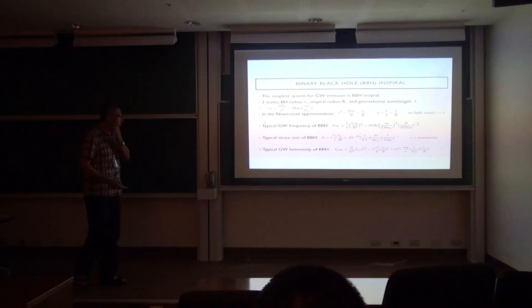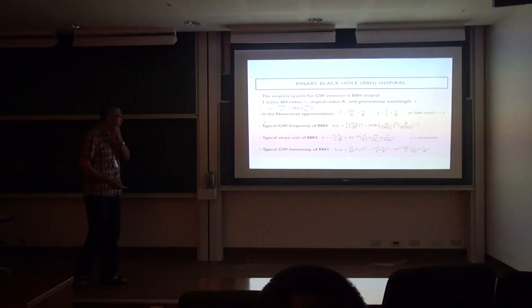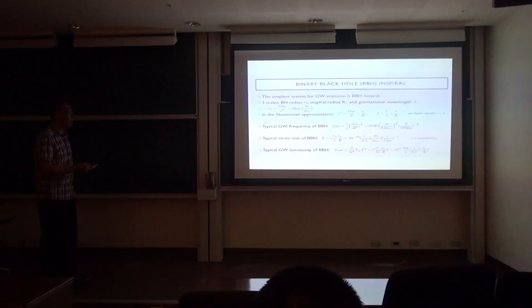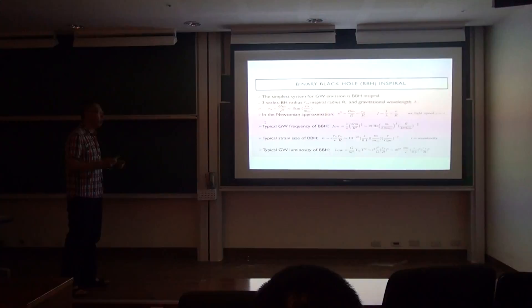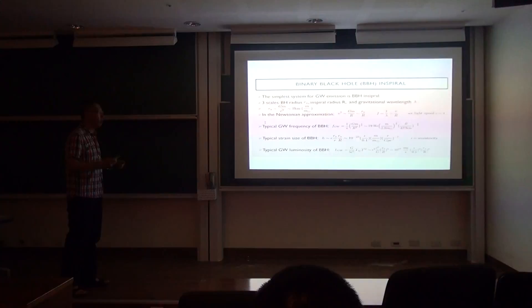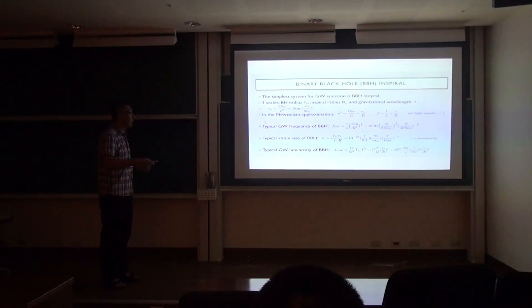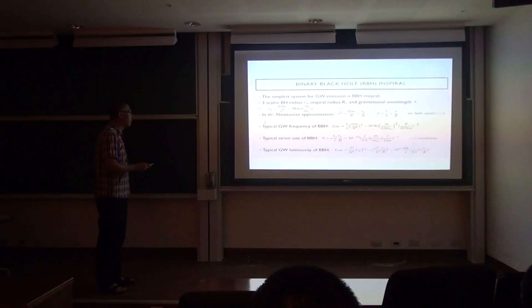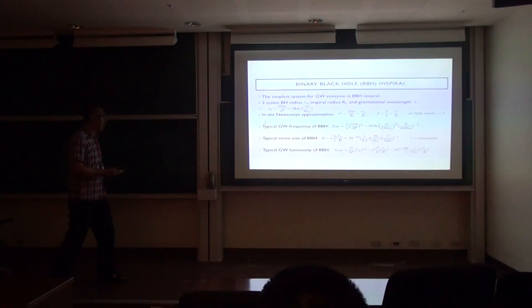Focusing on the binary black hole inspiral phase — before the two black holes merge — there are three relevant length scales: the Schwarzschild radius rₛ of each black hole, the orbital separation R, and the gravitational wavelength λ. These three scales are related by the orbital velocity v, with rₛ/R ~ v² and R/λ ~ v. The Newtonian approximation is valid when v ≪ c; otherwise post-Newtonian corrections are needed. The Schwarzschild radius of a solar-mass black hole is about 1 km.